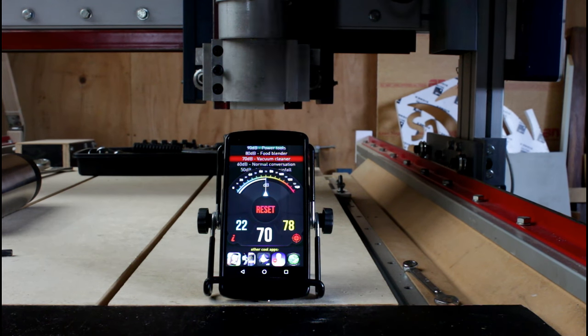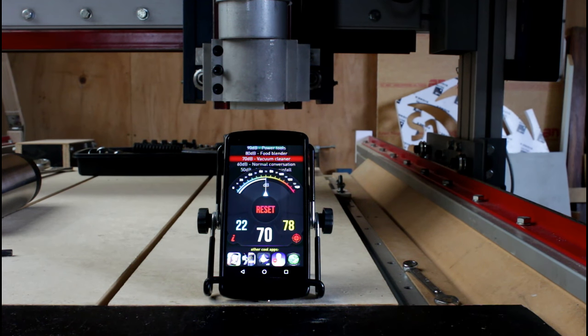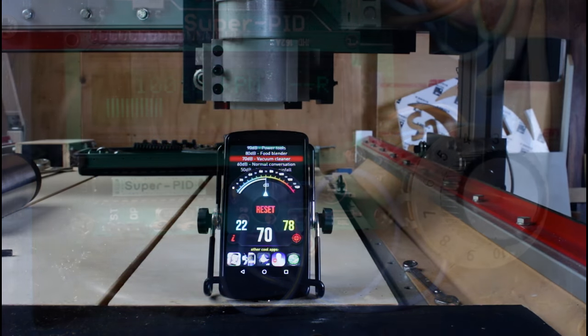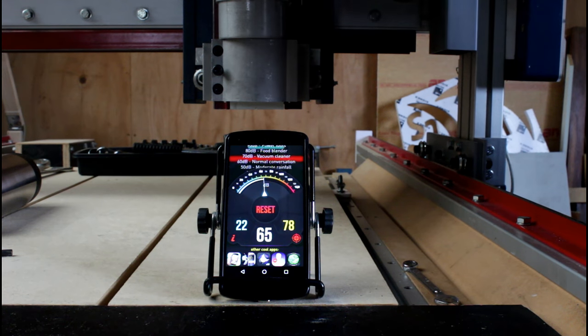You can see it sits around about the 70 dB mark. Now I've chosen 10,000 RPM for this test because that's generally the speed that I run my router at when machining.